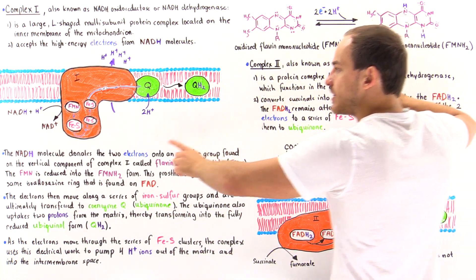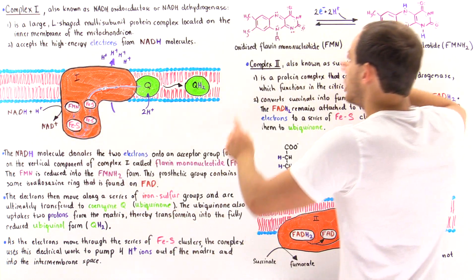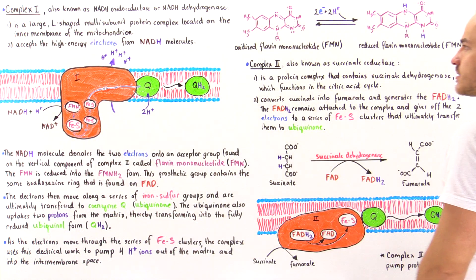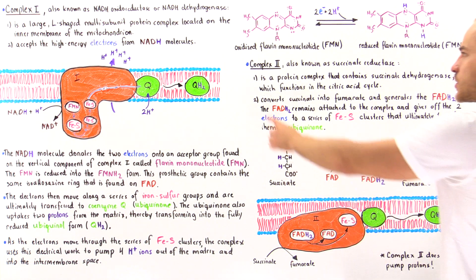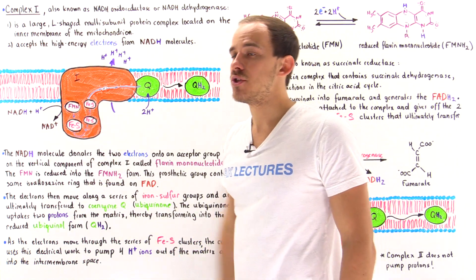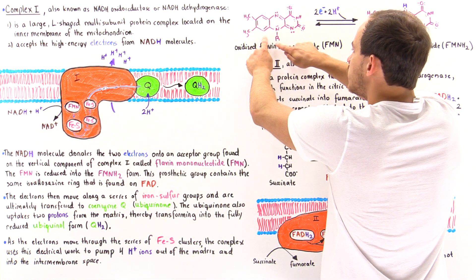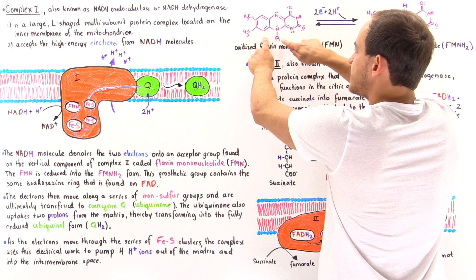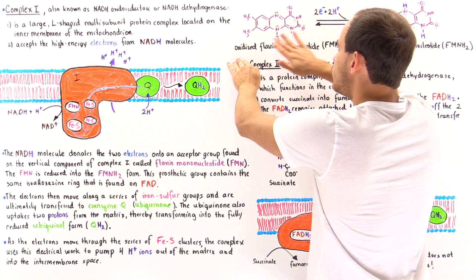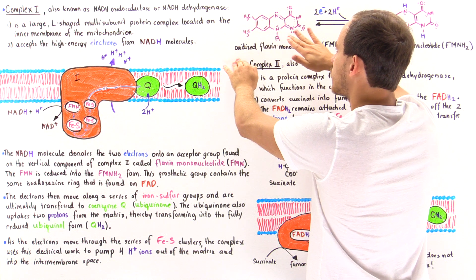If we look at the structure of FMN, this is what it looks like in its fully oxidized form — before it accepted those electrons. We have an R component containing a phosphate group, and a three-ring structure known as the isoalloxazine ring.